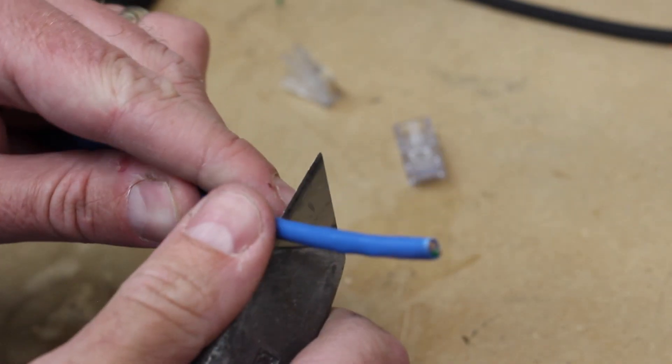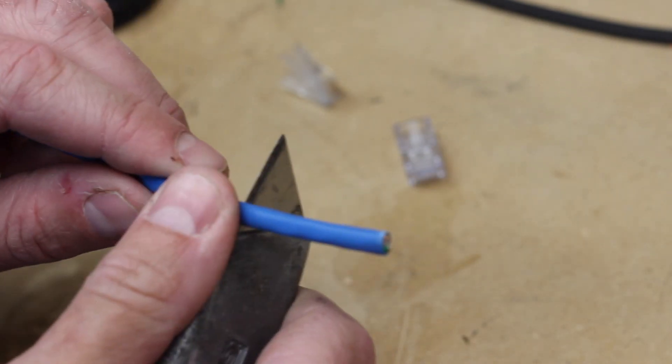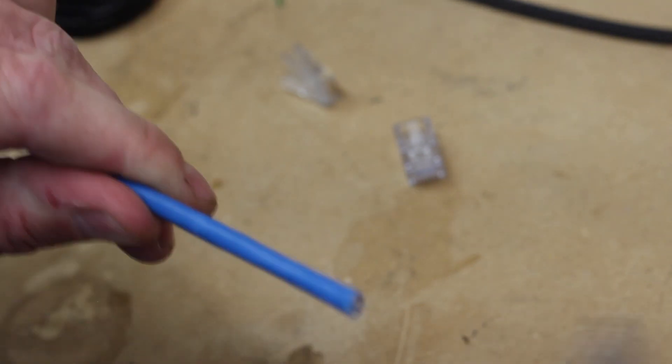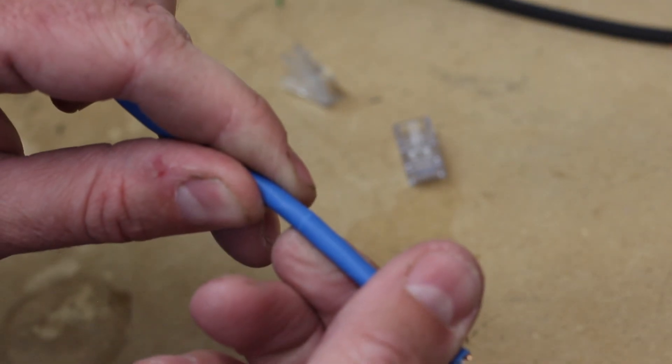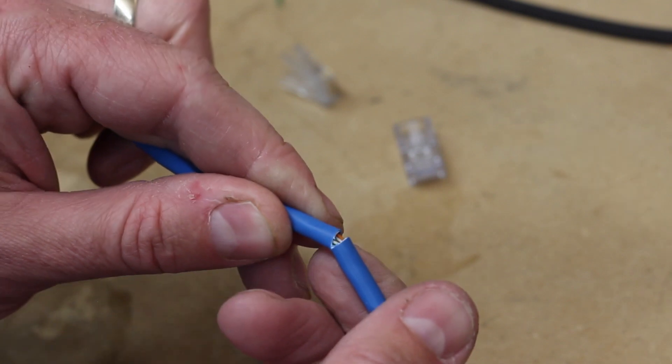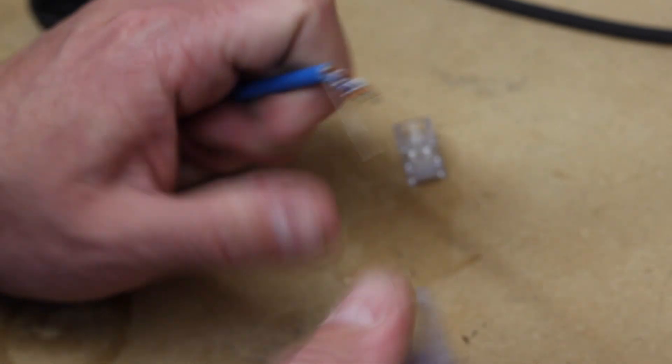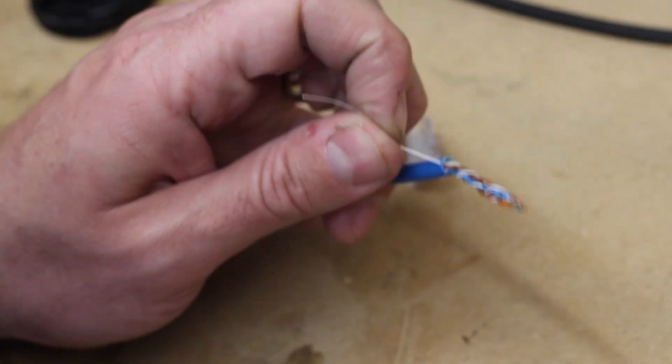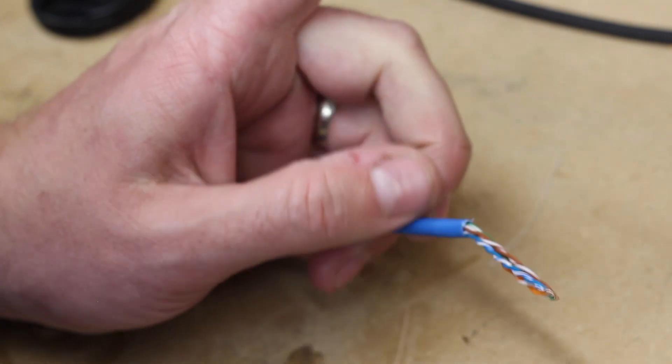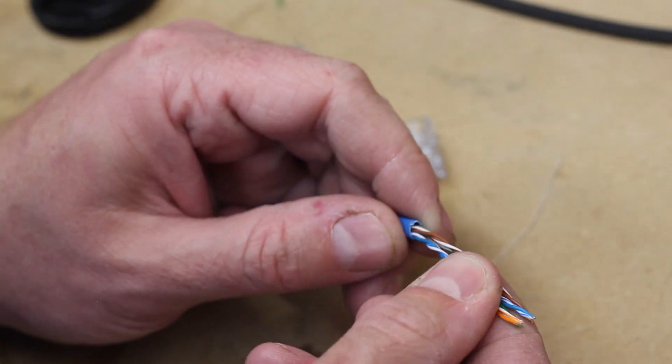Next step: take some wire, score it. You don't have to cut it. Very light score is all that's needed because you fold it and the stuff just breaks. Pop that off. Find the string, cut that off, don't need that. And then arrange your pairs.